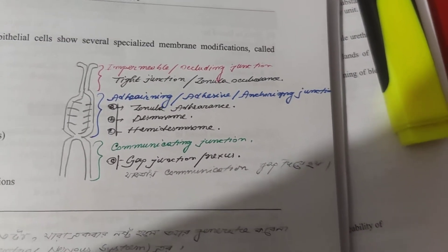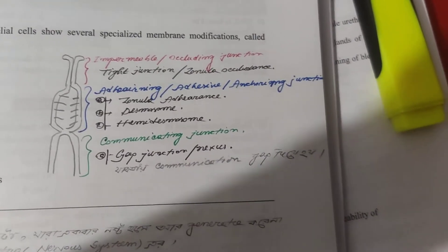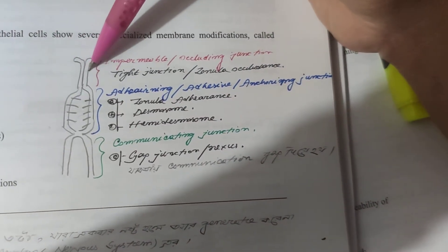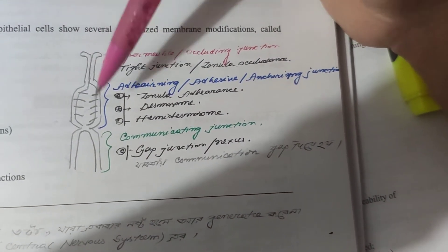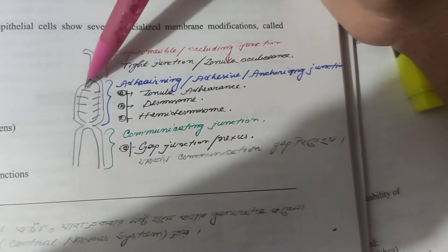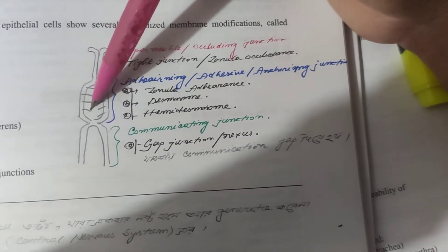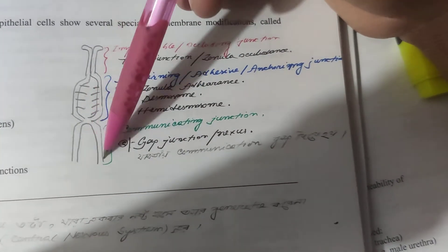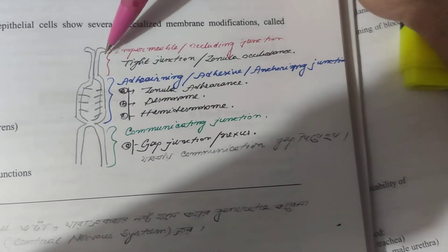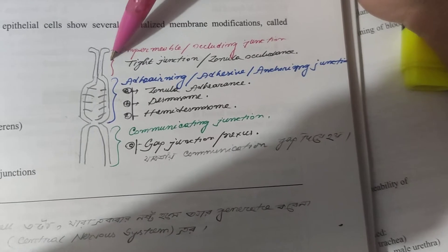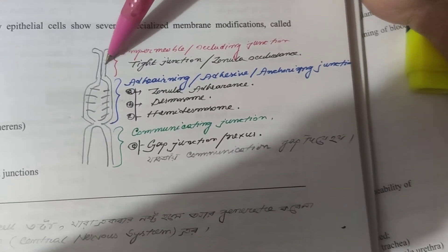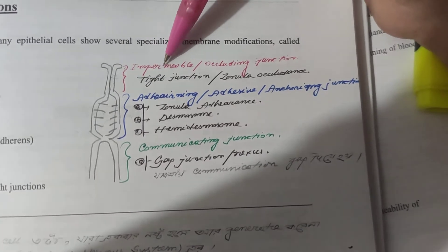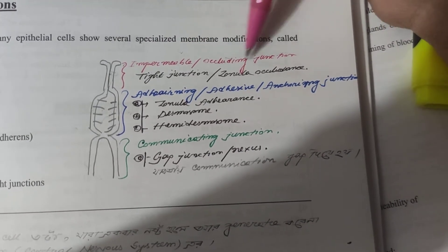The first thing we have to say is that there are two cells, and there is no gap between them. Make sure that there is no gap between them. This is the impermeable or occluding junction.